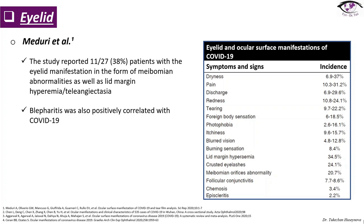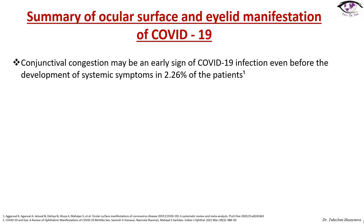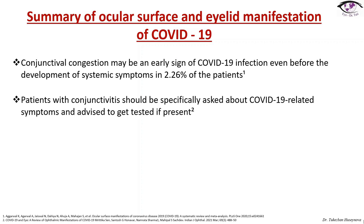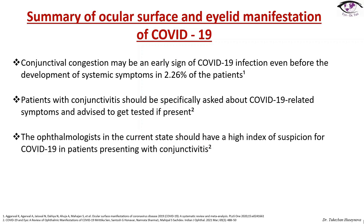As for the eyelid, Meduri et al. reported 11 patients with eyelid manifestations in the form of meibomian gland abnormalities, lid margin hyperemia and telangiectasia; blepharitis was also positively correlated with COVID-19. As a summary of ocular surface and eyelid manifestations: conjunctival congestion may be an early sign of COVID-19 infection even before the development of systemic symptoms in 2.26% of patients. Patients with conjunctivitis should be specifically asked about COVID-19 related symptoms and advised to get tested if present. Ophthalmologists should have a high index of suspicion for COVID-19 in patients presenting with conjunctivitis.